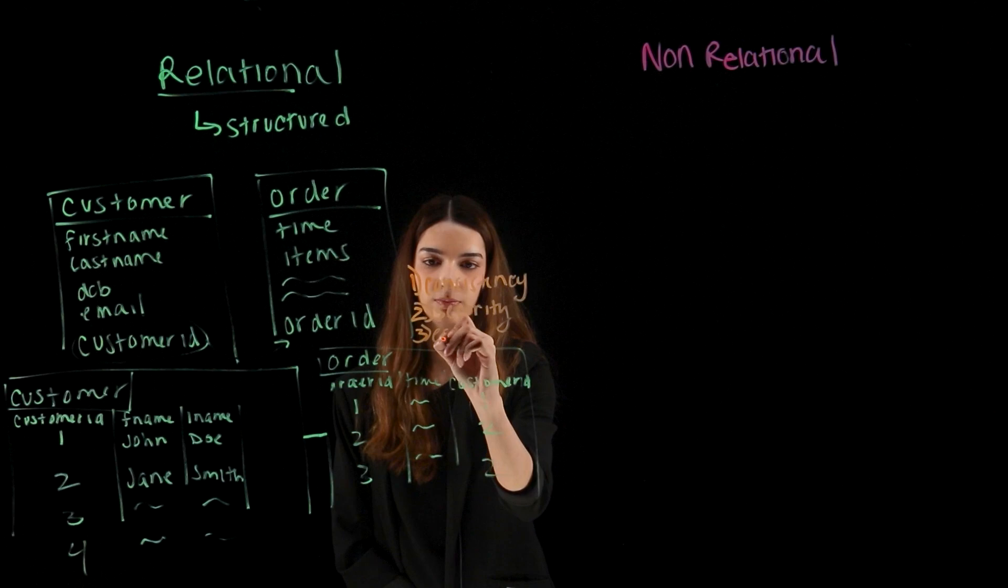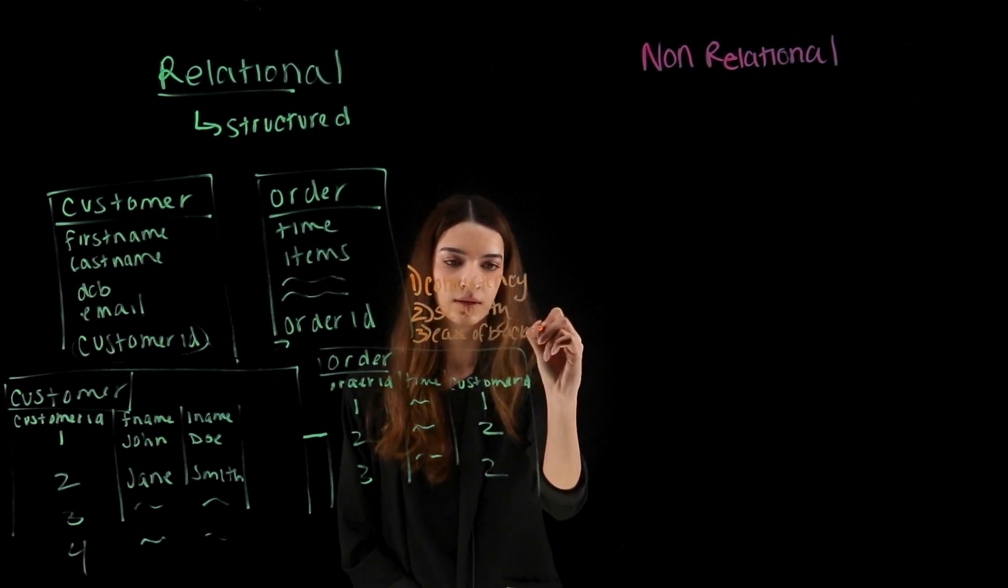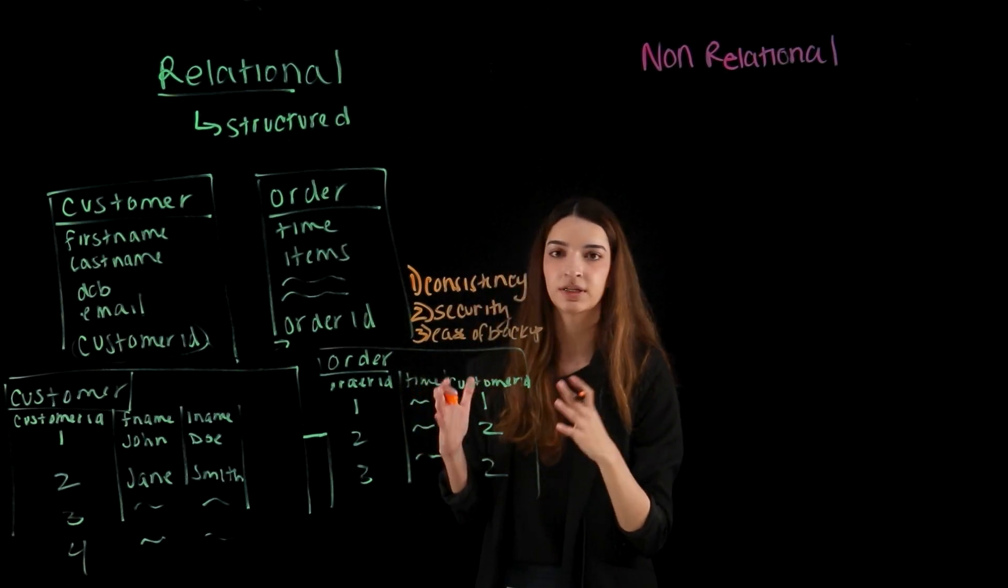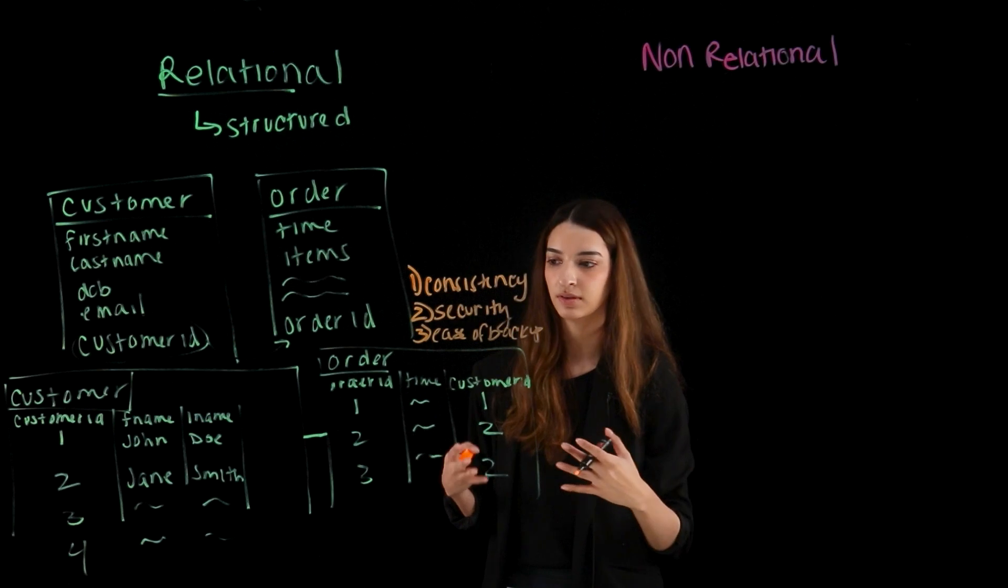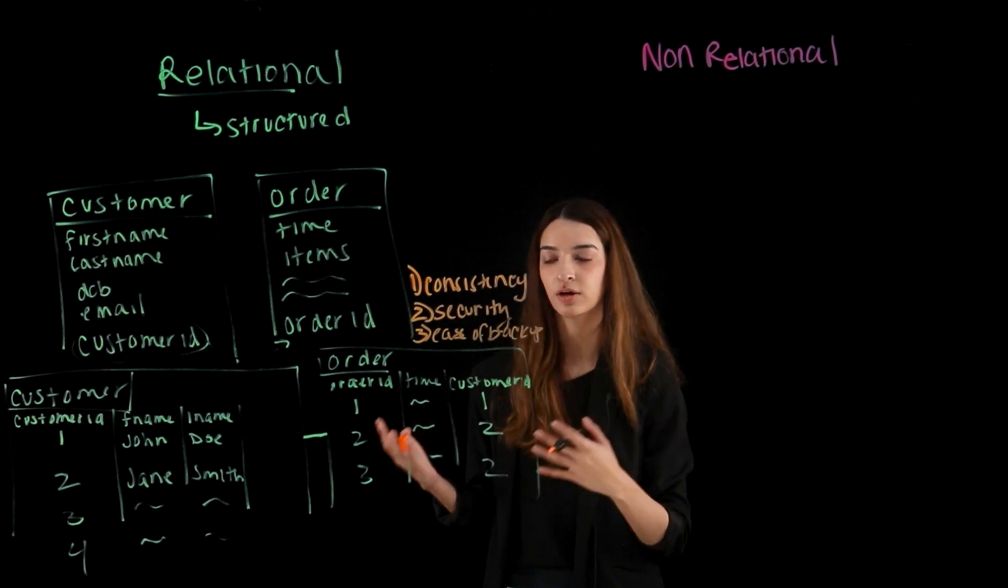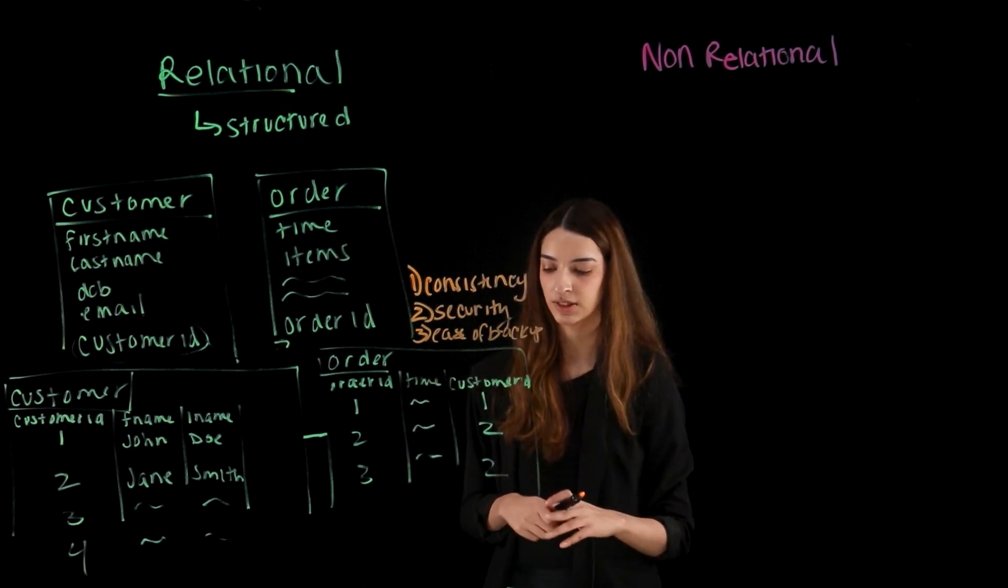And then finally, we have ease of backup and recovery. So because this data is very consistent, and at all times it remains consistent, it's easy to save the database at any point and easily recover it from what you recently had. So this gives us an idea of what a relational database looks like.